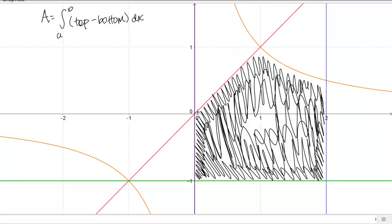But if I look at what is on the top of the region, there's really two different functions here, depending on where I am. It looks like from about 0 to 1, the function y equals x is on top, but from 1 to 2, the function 1 over x is on top.